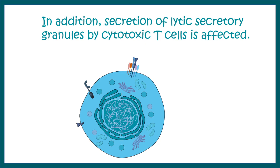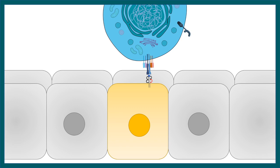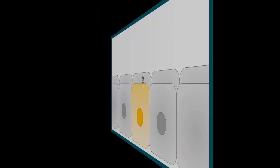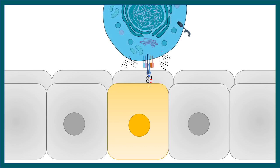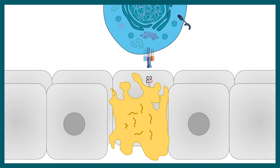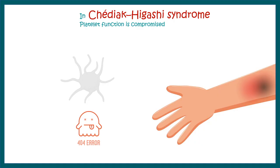Another cell type highly affected by this mutation is cytotoxic T cells. Cytotoxic T cells secrete specific granules known as perforin and granzymes, which demolish virus-infected cells by inducing an apoptotic pathway. But in the LYST gene mutant, these granules cannot be secreted properly, and as a result the body is more susceptible to viral infection as well.